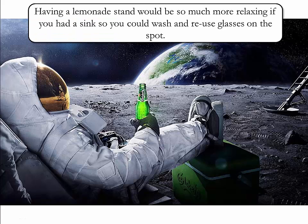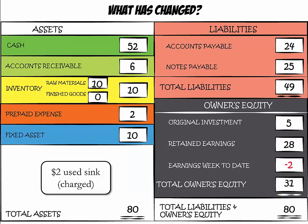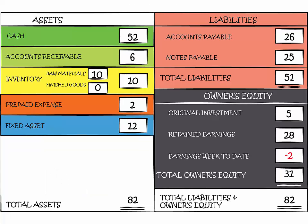Having a lemonade stand would be more relaxing if you had a sink to wash and reuse glasses. You find a second-hand sink for $2 and are allowed to buy it on account. Our fixed assets value increases from $10 to $12, and since the sink was purchased on credit, accounts payable also increases from $24 to $26.